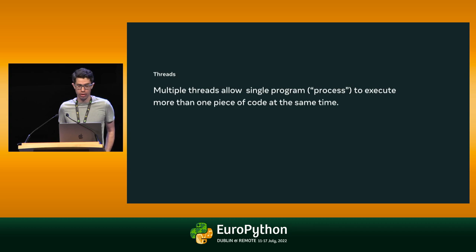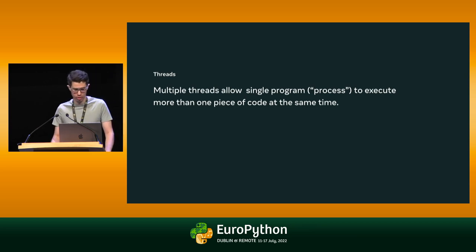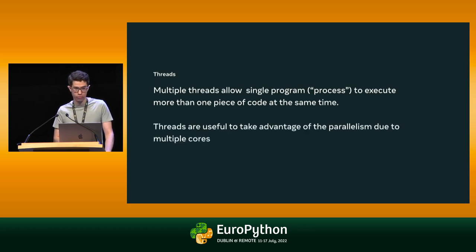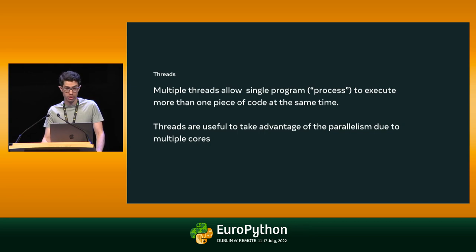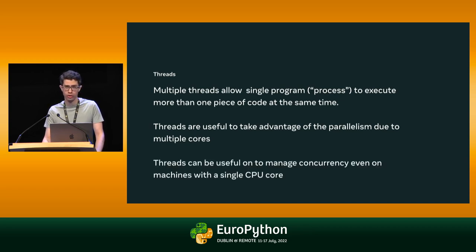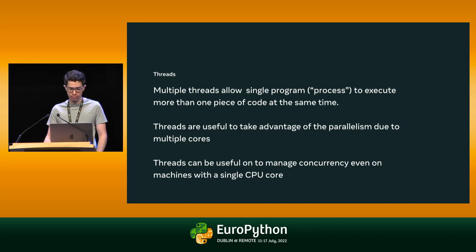I'd like to start with a bit of background on multithreading and Python's global interpreter lock. Multithreading using multiple threads allows an individual program to perform multiple tasks at the same time. Threads are useful for two related reasons. First, threads can exploit the parallelism available in multiprocessor and multicore computers. Threads can run on separate cores, so a program that can divide its work into multiple tasks executed by separate threads can run faster on a multicore computer than if it used a single thread.